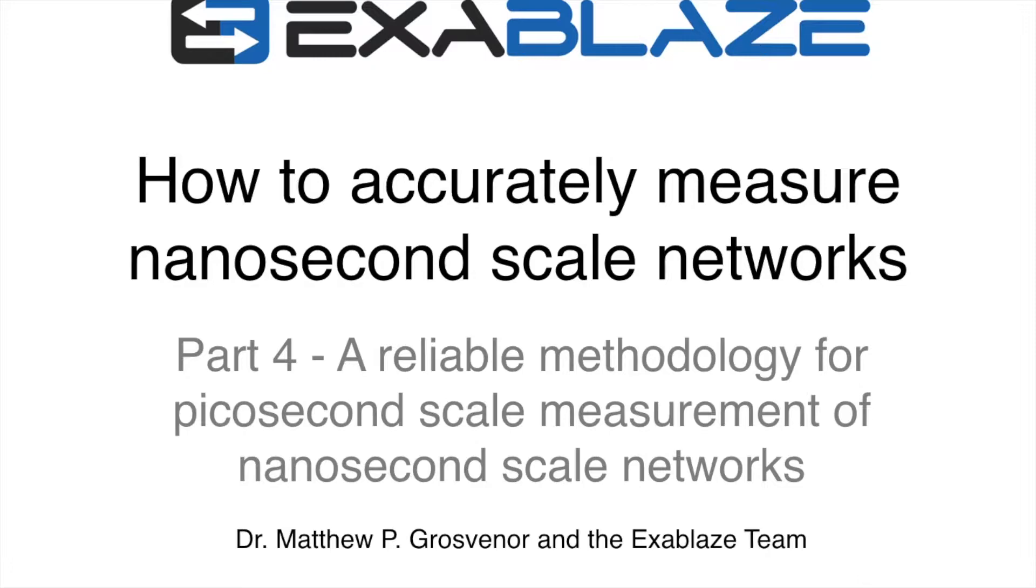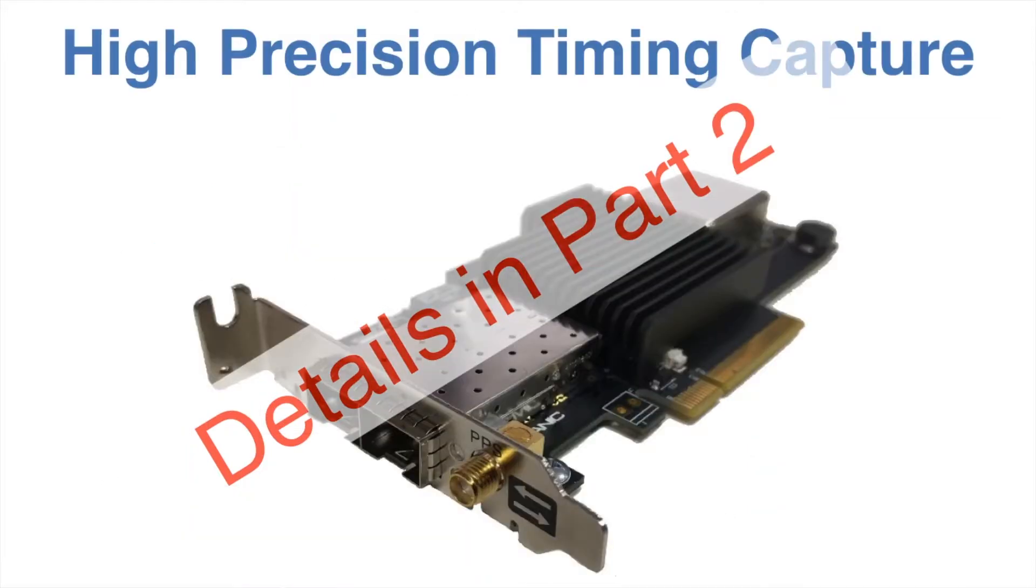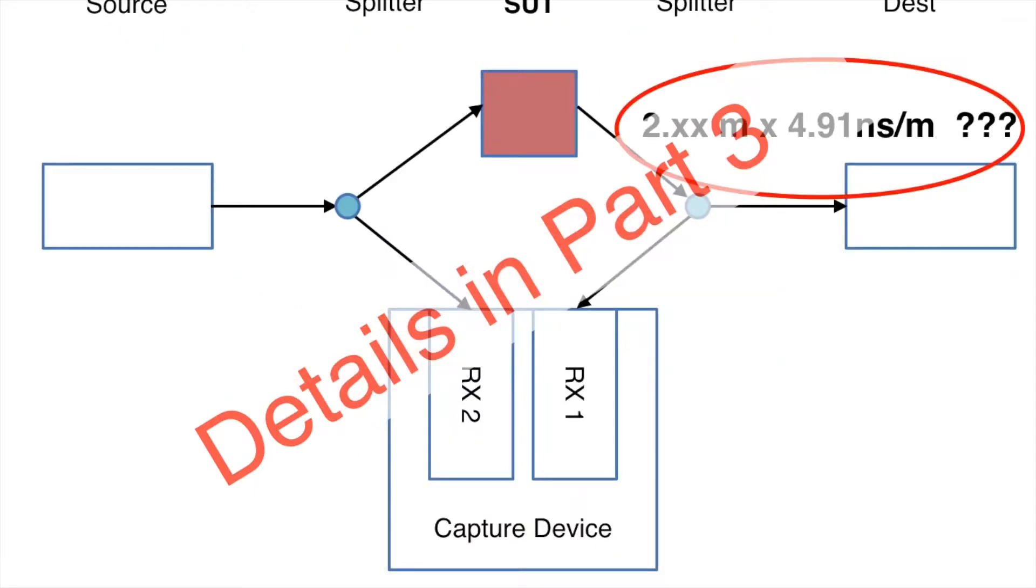In this part we're going to look at developing a reliable methodology for picosecond scale measurement of nanosecond scale networks. Previously we looked at how to quantify the accuracy of network measurement devices and introduced the Exynik HPT, the highest precision timing and capture device available on the market. Finally we looked at how not to do high-precision network measurement and the reason for this was the delays were difficult to estimate.